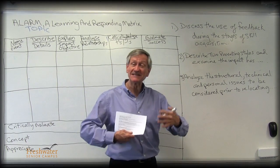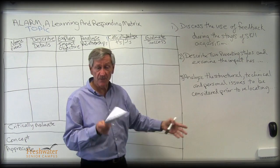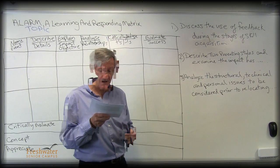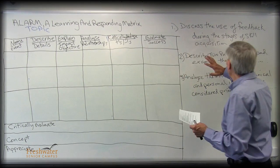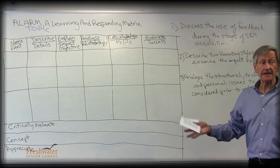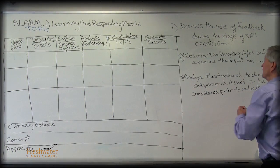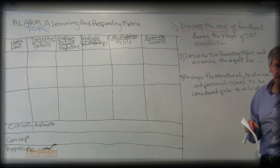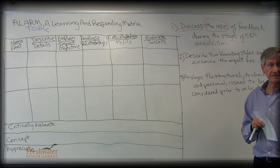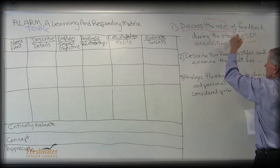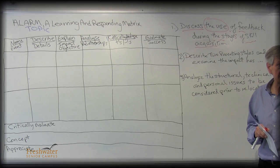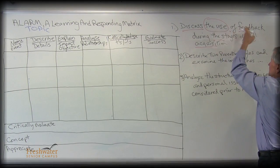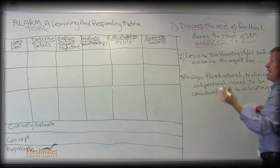So I've just written them up on the board. Just to look at the first one. Discuss the use of feedback during the stages of skill acquisition. So just like I said, underline the verb. As soon as I see the use, I know that's got to go evaluative level. And that's all the content I should have learned. Discuss the use of feedback during the stages of skill acquisition. Stages. How many stages were there? I think there are three.